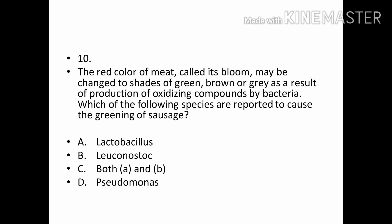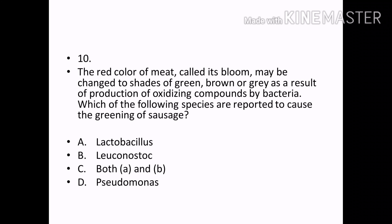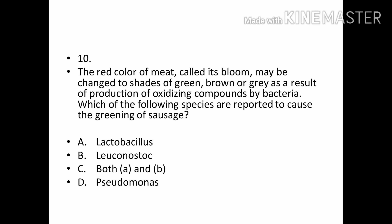The red color of meat called myoglobin may be changed to shades of green, brown, or grey as a result of production of oxidizing compounds by bacteria. The following species are reported to cause the greening of sausage: Options — Lactobacillus, Leuconostoc, both A and B, Pseudomonas. Correct answer: Option C — Both A and B.